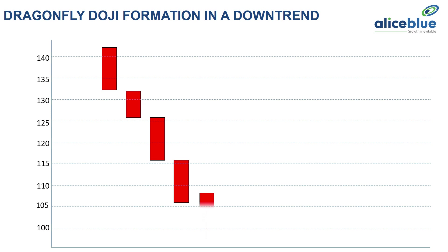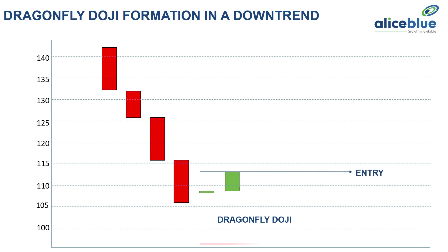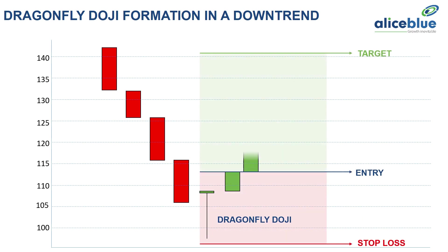For execution, the next candle should close above the high of the Dragonfly Doji candlestick pattern, and the next candle's high will be the above entry. Stop loss is the low of the Dragonfly Doji candlestick with some gap. One more thing — this pattern is only valid at a key level, which means at a support or in a demand zone only.